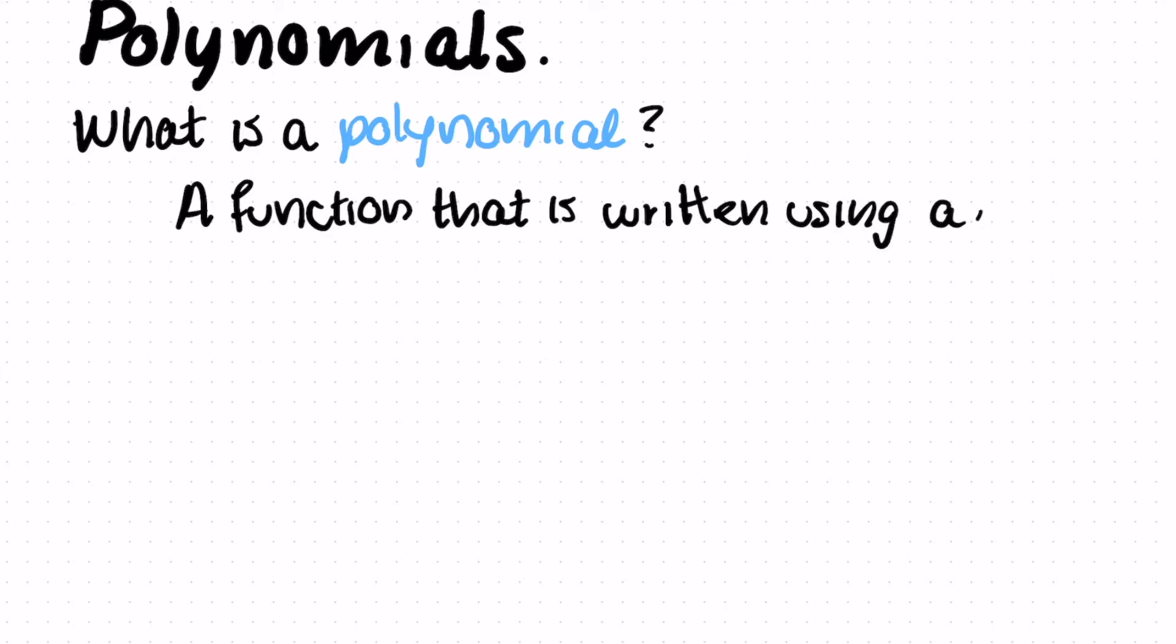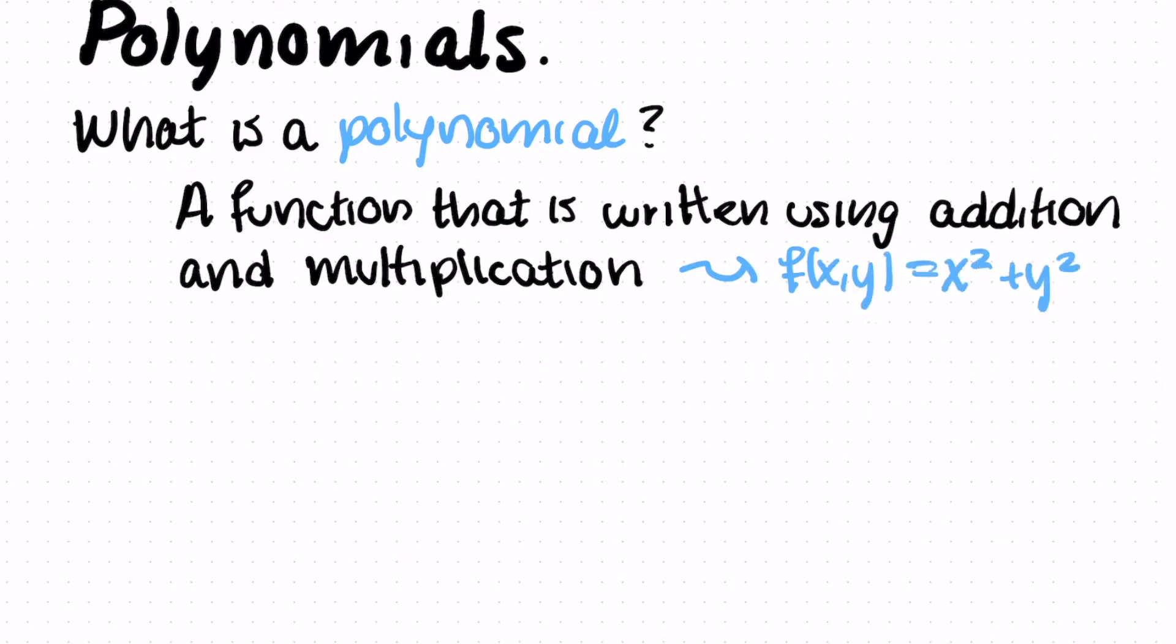In algebraic geometry, we took a polynomial and made from it an algebraic shape. And in tropical geometry, we're going to take a tropical polynomial and make a tropical shape. So we really need to understand what a polynomial is in order to do this. A polynomial is any function that's written using additions and multiplications. So for example, we can take f(x,y) equals x squared plus y squared.